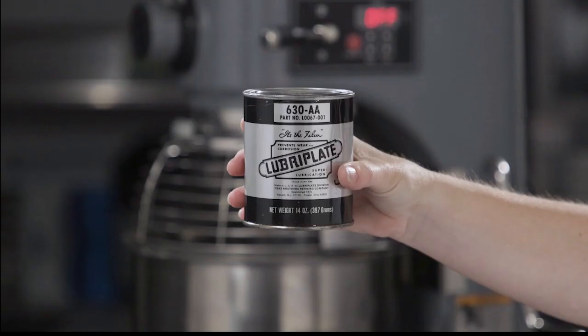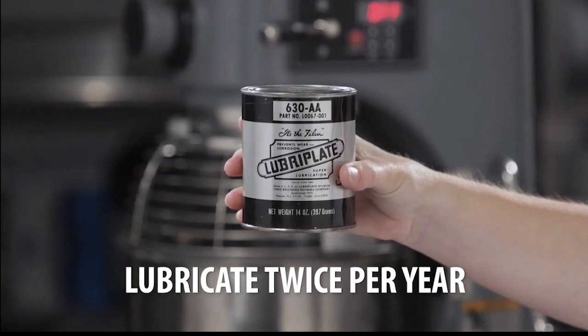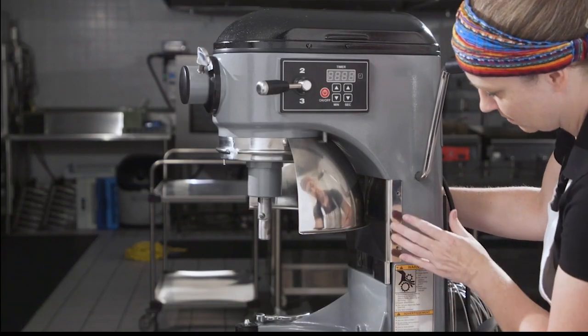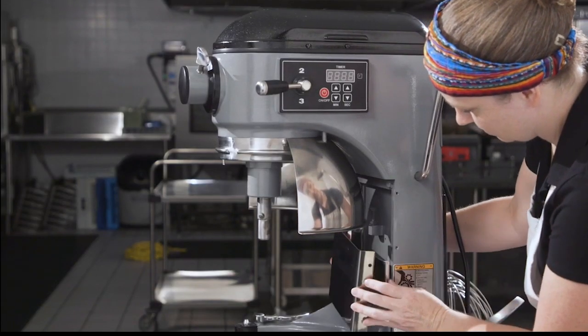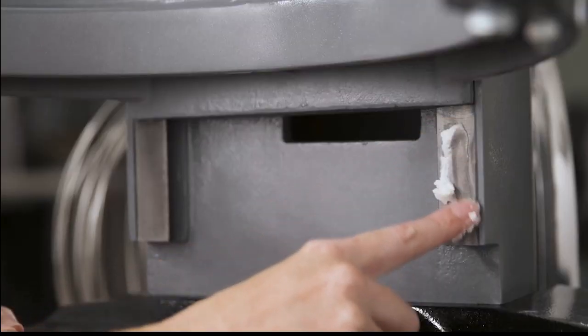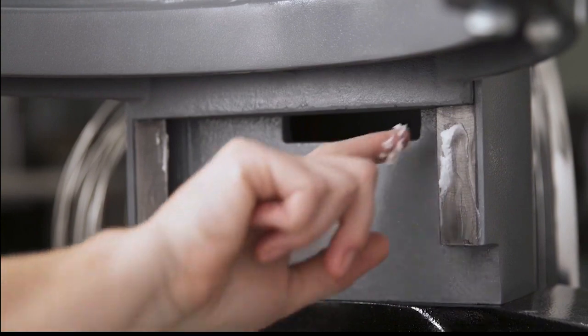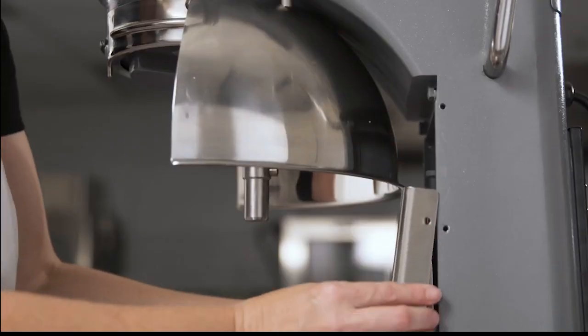Sometimes you need to do a little preventative maintenance. The slideways should be lubricated approximately twice a year. Fully lower the bowl support and remove the apron. Wipe a thin coat of lubricant 630AA food grade oil on each slideway. Reinstall the apron.